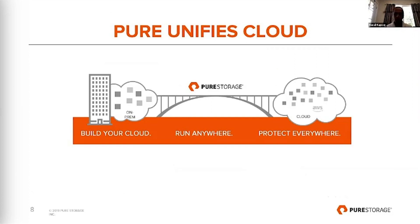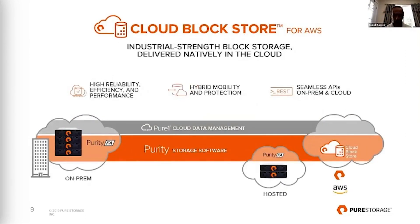We announced our cloud vision last year around three pillars. First, Build Your Cloud — allowing customers to build out their private clouds and hosted clouds on Flash Array and Flash Blade appliances. Second, Run Anywhere — the focus of today's conversation — allowing customers to run applications anywhere, on-prem or in the cloud, without compromise. Third, Protect Everywhere — modernizing our data protection strategy by introducing Flash to Flash to Cloud. Today's focus is Run Anywhere, giving customers the flexibility to extend on-prem into the cloud with the same capabilities.